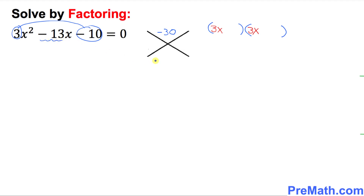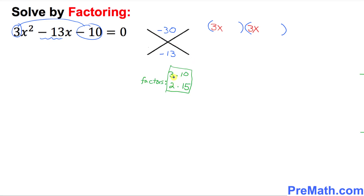Let's find the factors of negative 30. We try 3 times 10 and 2 times 15. Using 2 and 15, we need negative 15 and positive 2 — because multiplying them gives negative 30, and adding them gives negative 13. Those are our two factors.